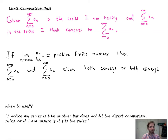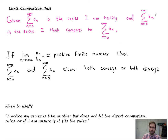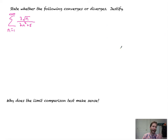You literally just take the limit of these two pieces of the series — the functions — and see if you get a positive finite number. So if the series you're comparing it to diverges and we get that positive finite number, then the series we want to know about diverges, and vice versa with converges. Let's see it in action.